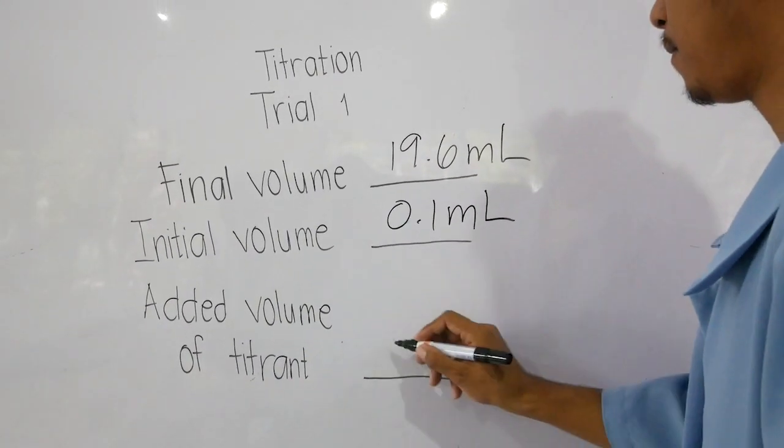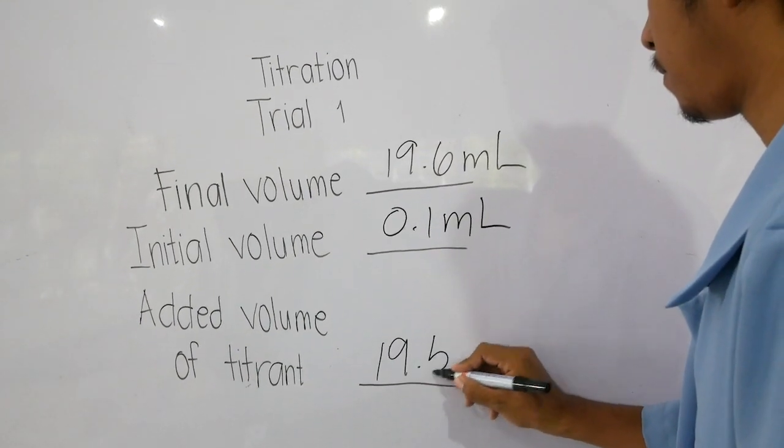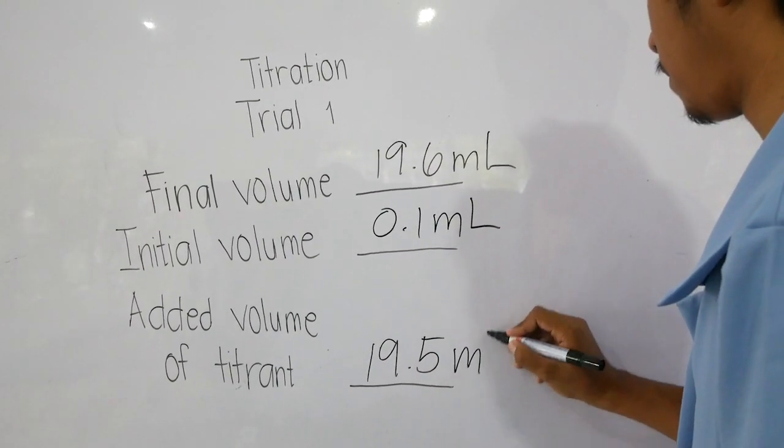Get the difference between the initial and the final volumes to find the total volume of titrant added to the analyte.